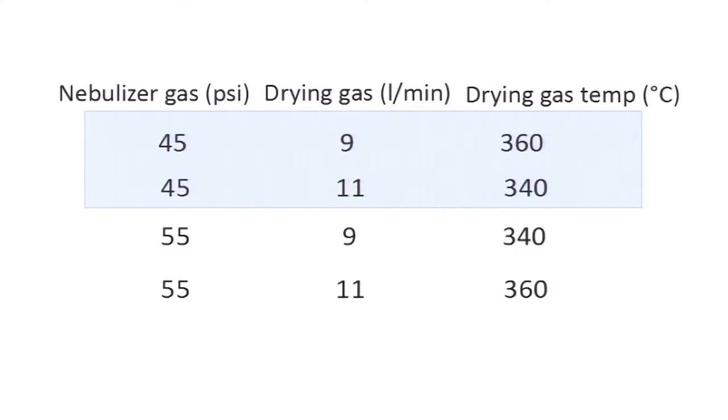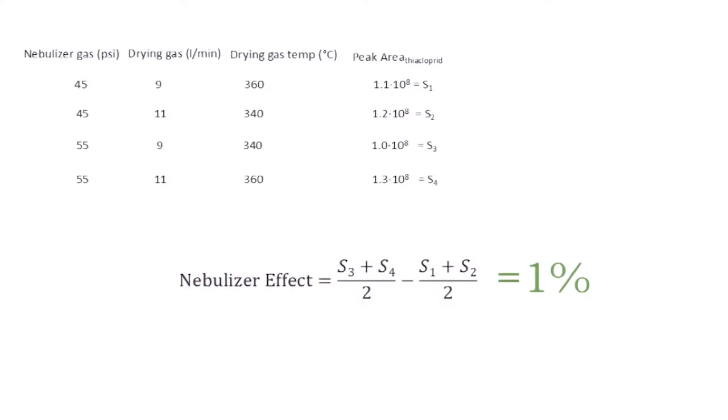We can see that these experiments can be divided from the nebulizer gas point of view to two sets, the low values and the high values of nebulizer gas pressure. At the same time, the drying gas flow rates and the drying gas temperature are for both sets, both high and low. Therefore, we can study the effect of nebulizer gas as follows. If we have the signals, we can combine the measurement results obtained at the high nebulizer gas flow pressures and the ones obtained at the low nebulizer gas pressures and calculate the effect of nebulizer gas. And while comparing it with sensitivity in general, we can find the effect in percentages.